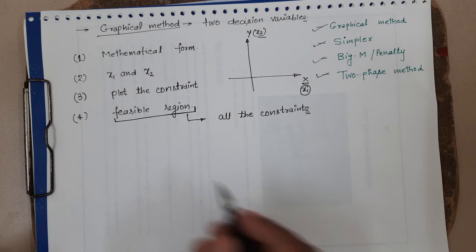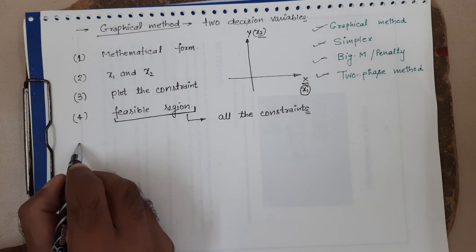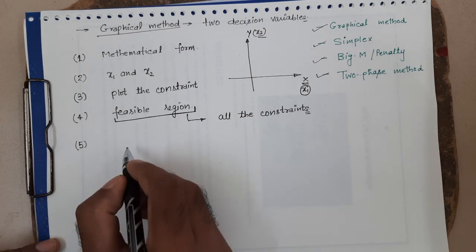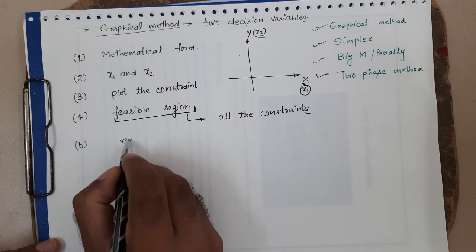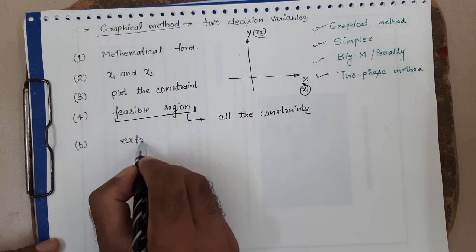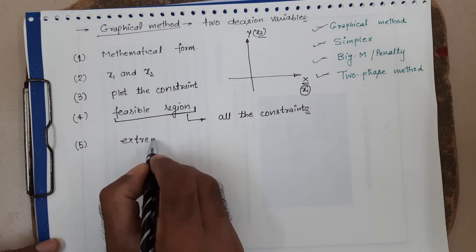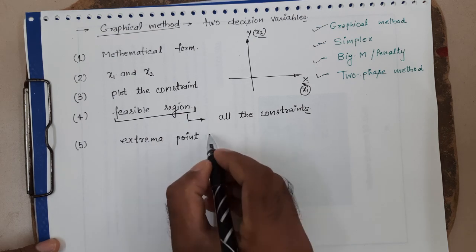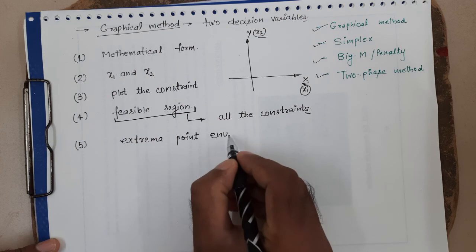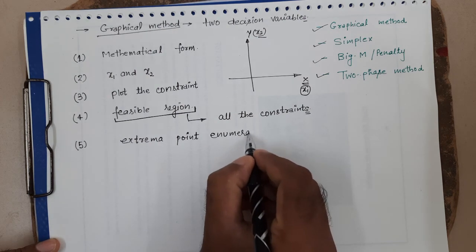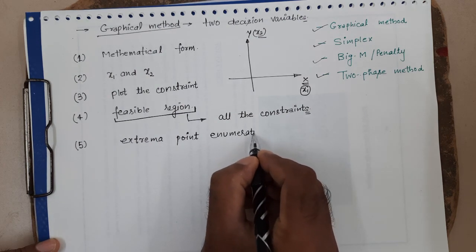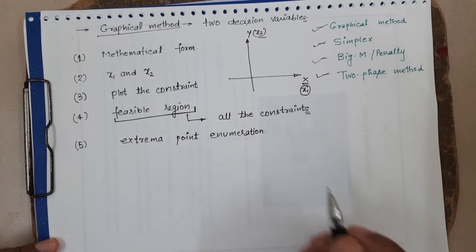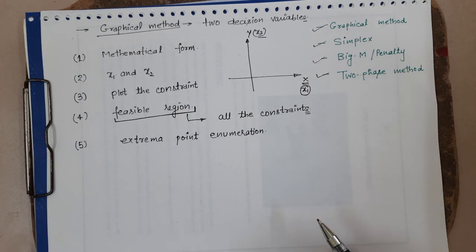We want to find out the optimal solution. For optimality, we will use extreme point enumeration to find out the optimal solution.